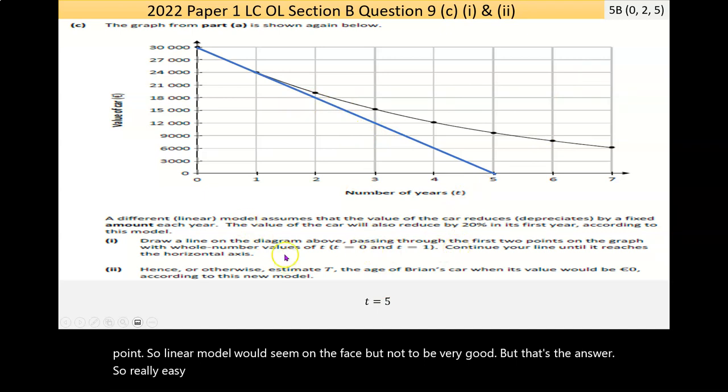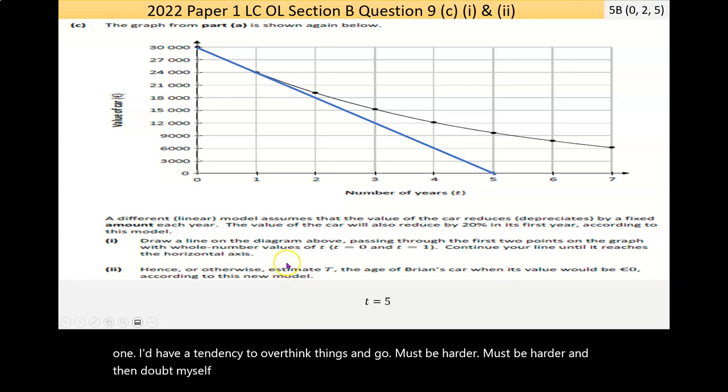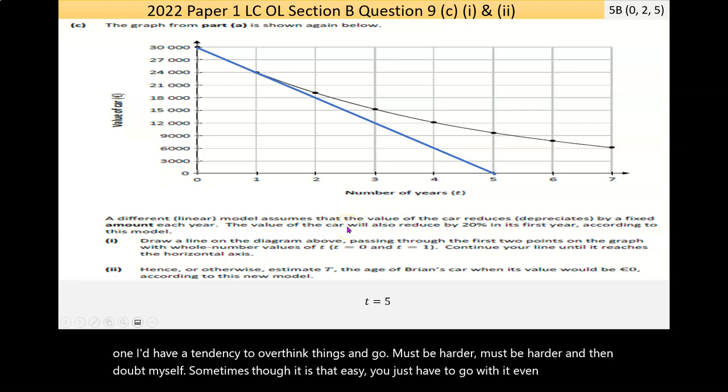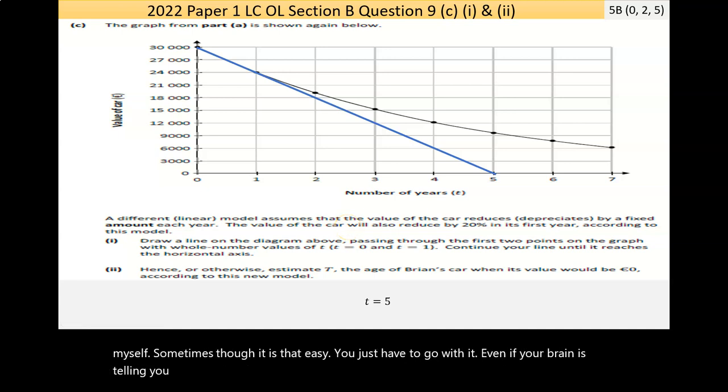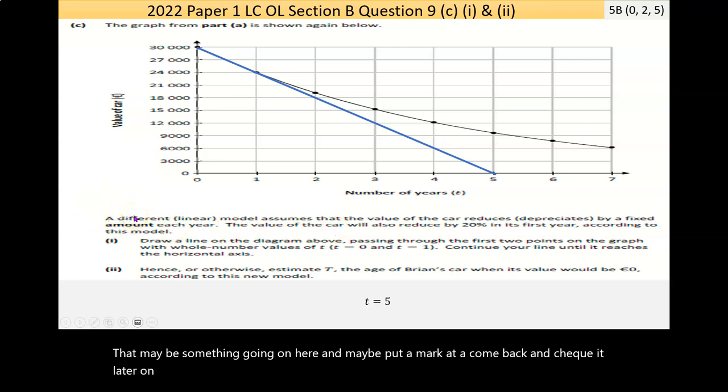So really easy, just lots of words. Might be hard to figure out what's going on in part 1. I'd have a tendency to overthink things and go, it must be harder, it must be harder, and then doubt myself. Sometimes, though, it is that easy. You just have to go with it. Even if your brain is telling you that maybe there's something going on here. Maybe put a mark at it, come back and check it later on, and see if your brain thinks the same thing, if you have time at the end of the exam.